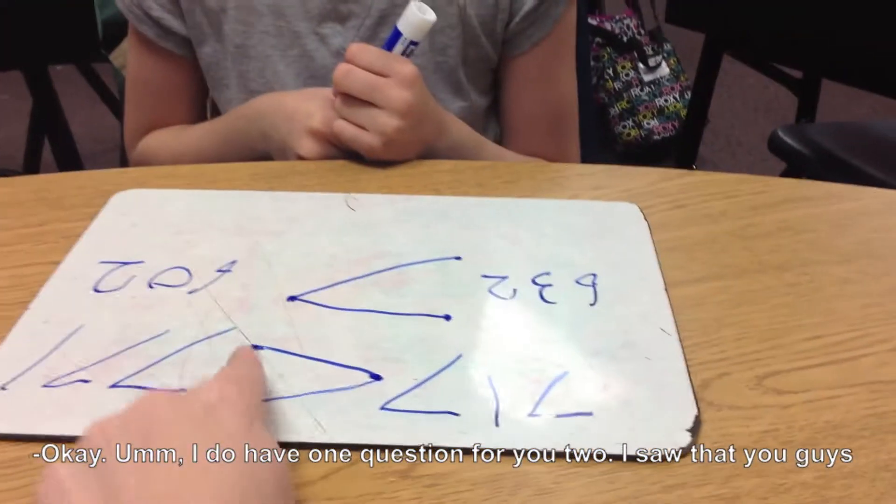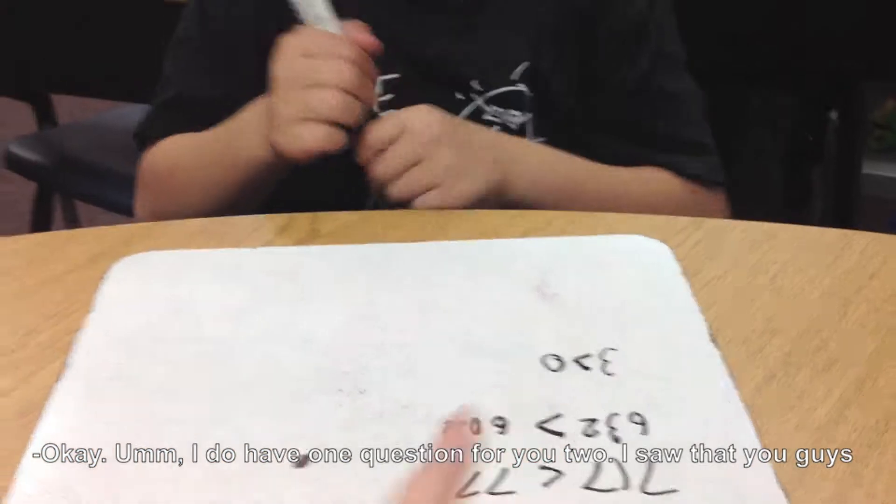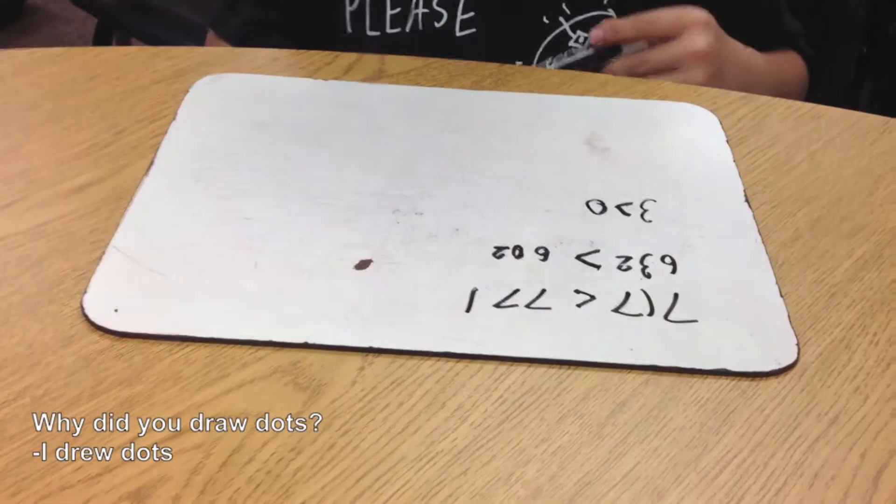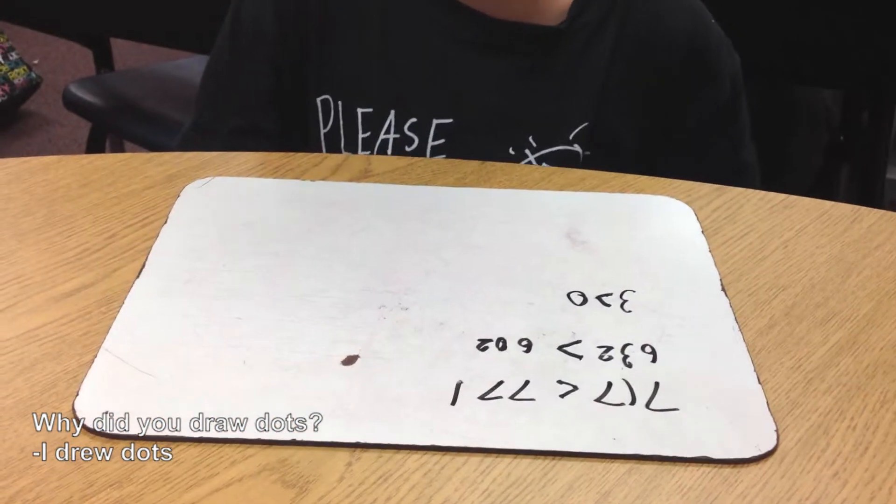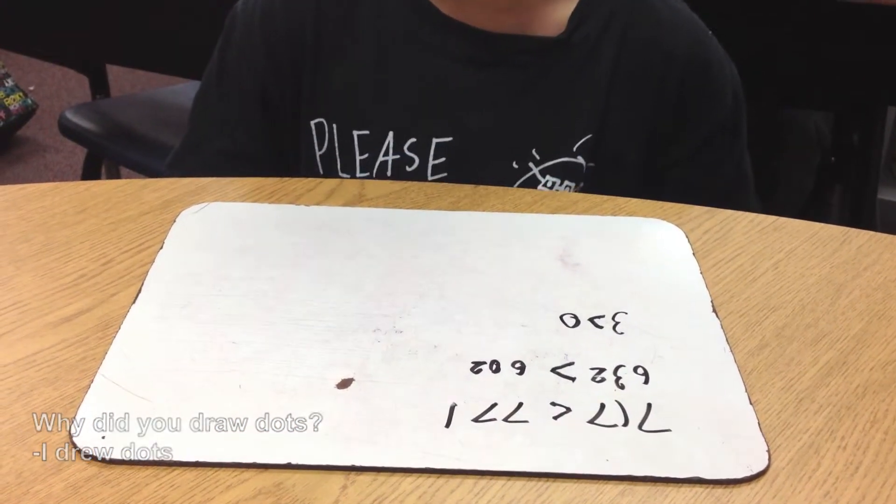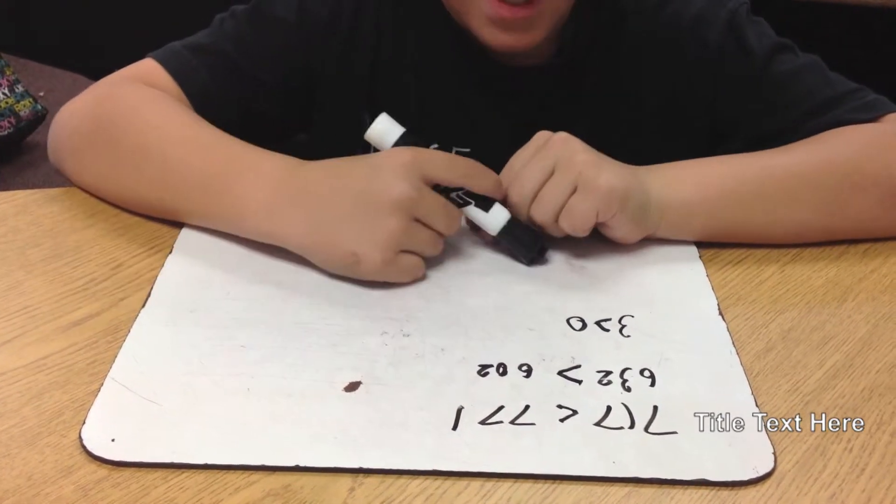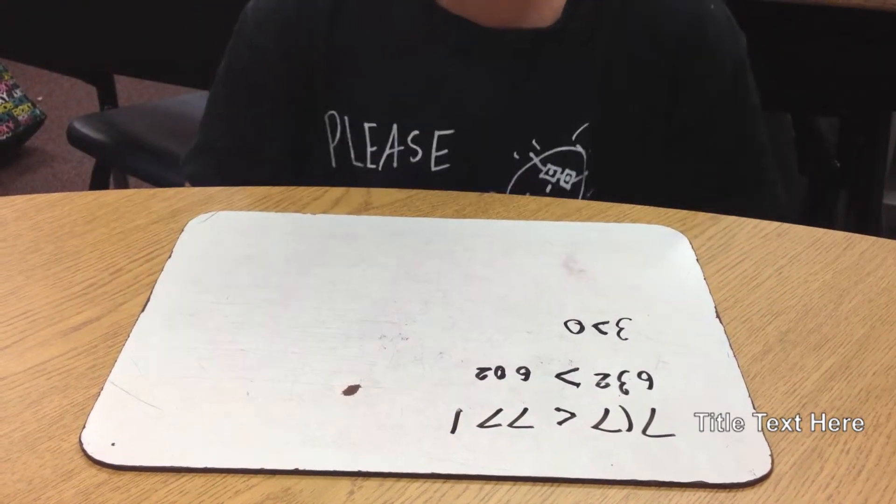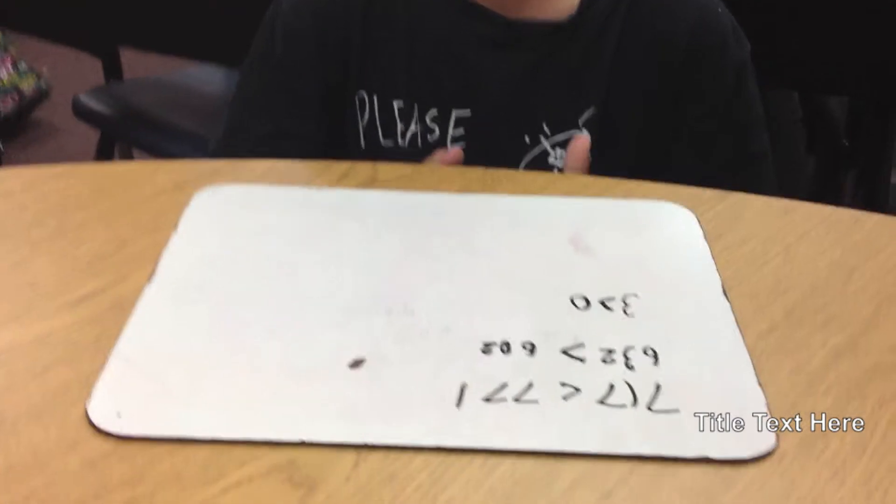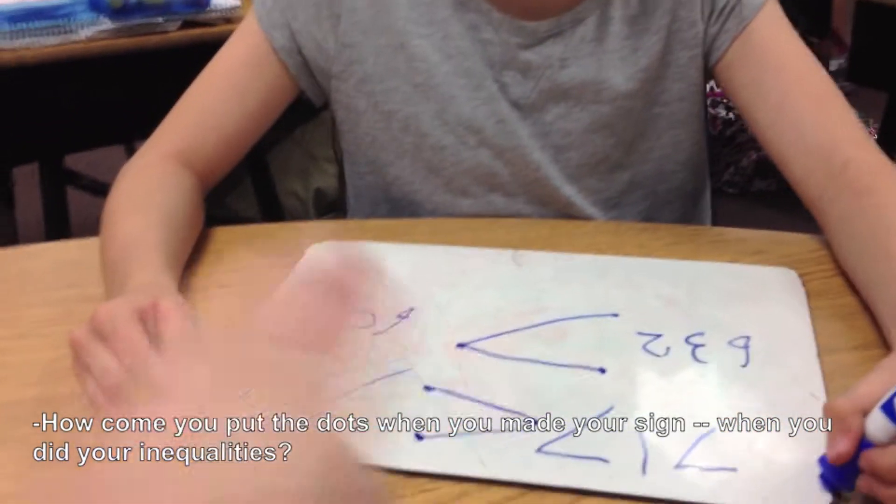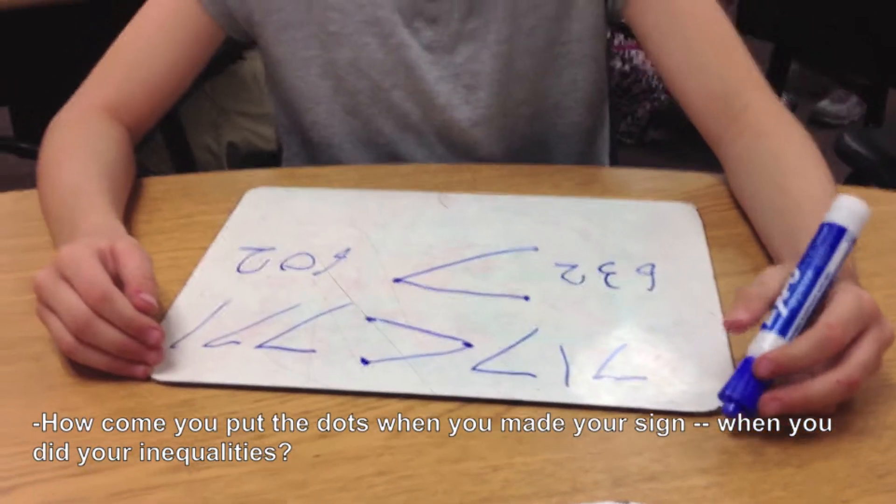Okay. I do have one question for you too. I saw that you guys drew dots when you made your sign. Why did you draw dots? I drew dots because it could help me trace it and not make it all sloppy for someone. How did you put the dots when you made your sign, when you did your inequalities?